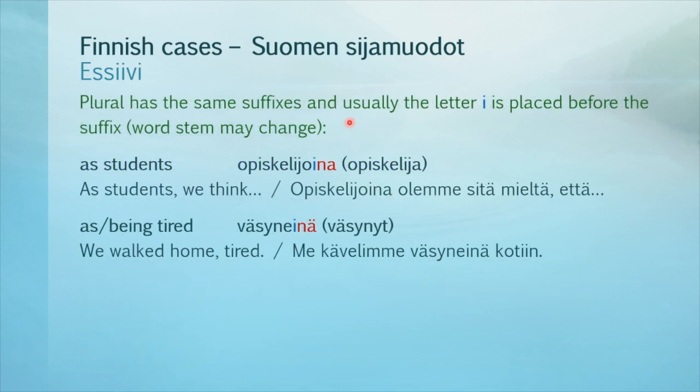Plural forms have the same suffixes, and usually the letter E is added before the suffix — I've marked it in blue. 'As students' is opiskelijoina — basic form: opiskelija. 'As students, we think': Opiskelijoina olemme sitä mieltä että.